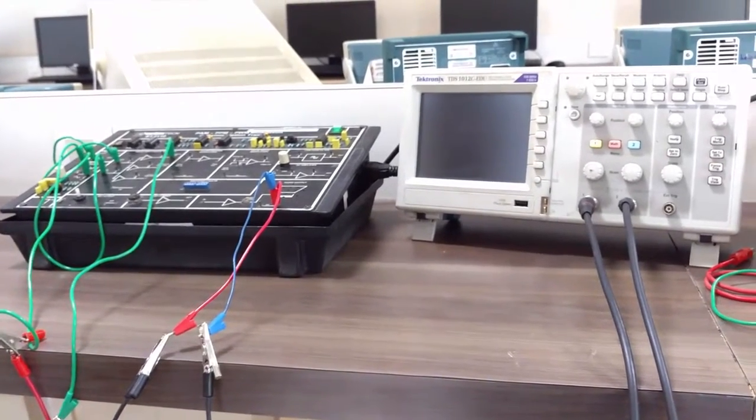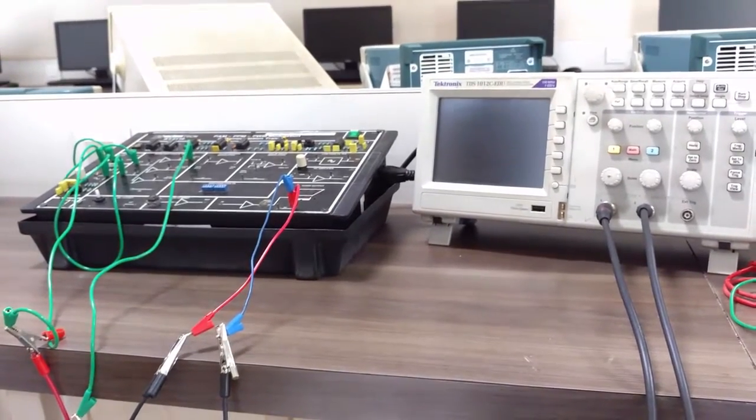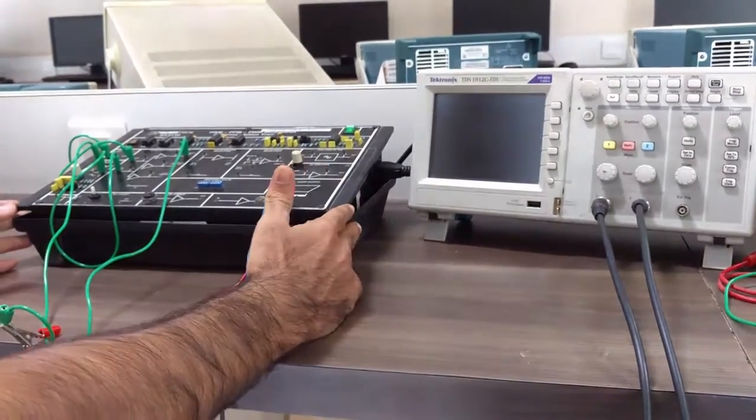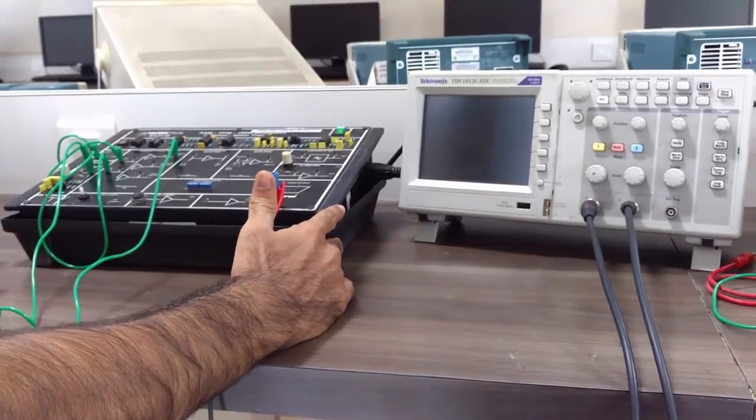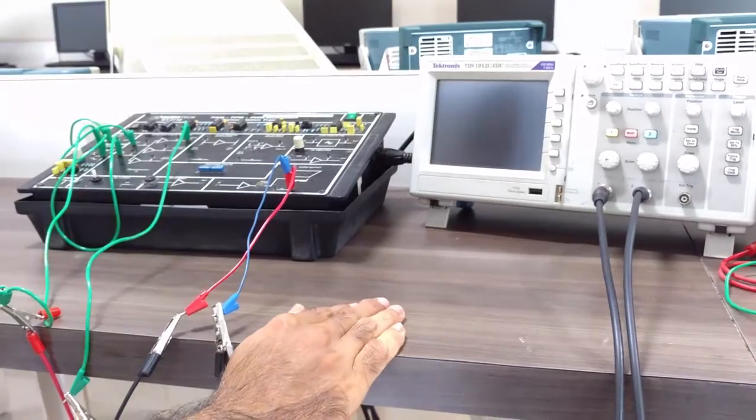So now let us see the connections for PAM on the trainer kit. For this experiment we need the Pulse Amplitude Modulation and Demodulation Trainer Kit, DSO, BNC wires, and patch cords. So now let us begin with the connection.